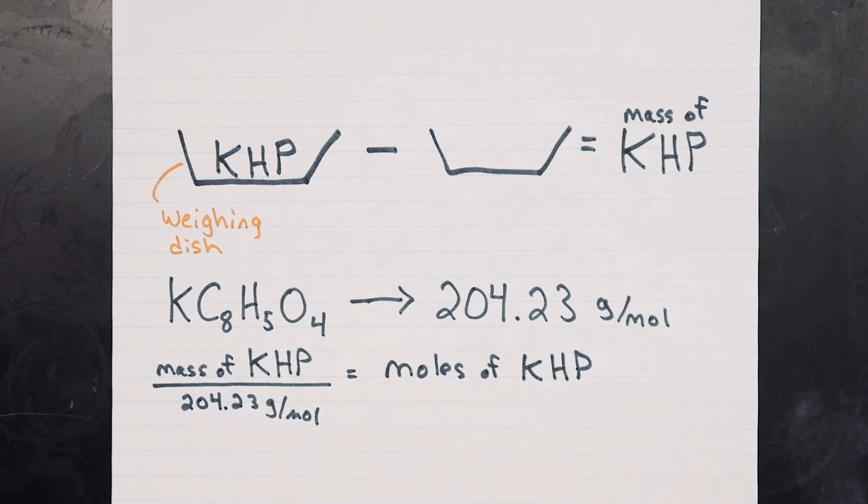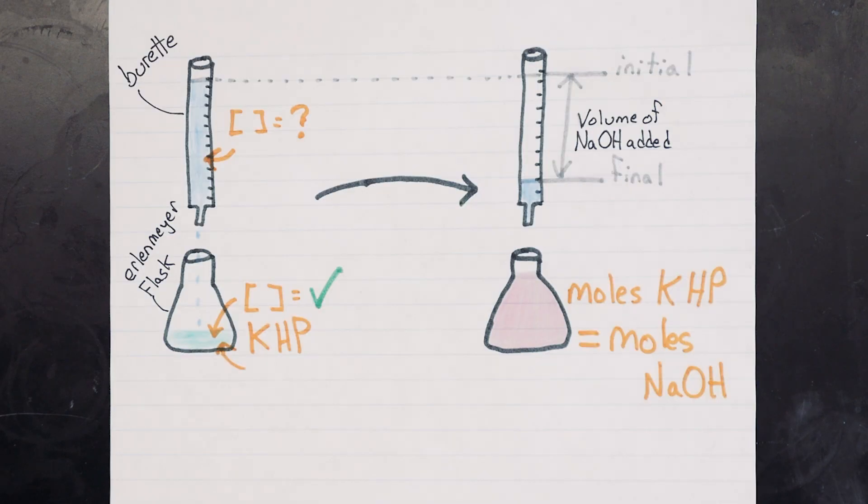Next, we determine how much sodium hydroxide reacted with our standard solution by taking the difference between the initial and final burette volumes we had. We know that in that volume of sodium hydroxide, there must have been the same number of moles of KHP and NaOH.